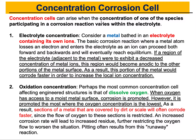The metal creates ions that go into the electrolyte, which is typically water, and electrons also move through the system. The electrons interact with the electrolyte and oxygen to create a hydroxyl group that reacts with the metallic ions again. There are a lot of ions and electrons moving around in the corrosion cell. If any of these change compared to other places within the electrolyte — especially the ion concentration — we create something called a concentration corrosion cell.